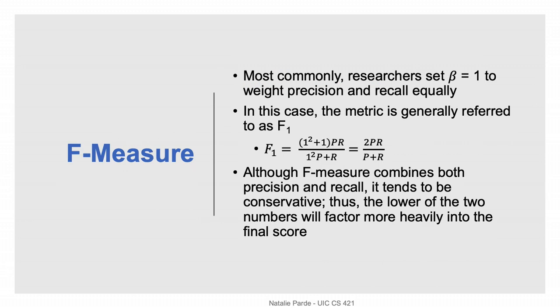It's most common to set beta to one in natural language processing tasks since usually both precision and recall are important. In this case, the F-measure is usually referred to as the F-one measure or just F-one. When you insert a beta value of one into the F-measure equation, you get the sum of one squared plus one times precision times recall, all divided by one squared times precision plus recall. This simplifies to just the product of two times precision times recall divided by the sum of precision and recall. Even though precision and recall are weighted equally in F-one, the measure is a bit conservative, so whichever of the two numbers is lower will factor a bit more heavily into the final score.